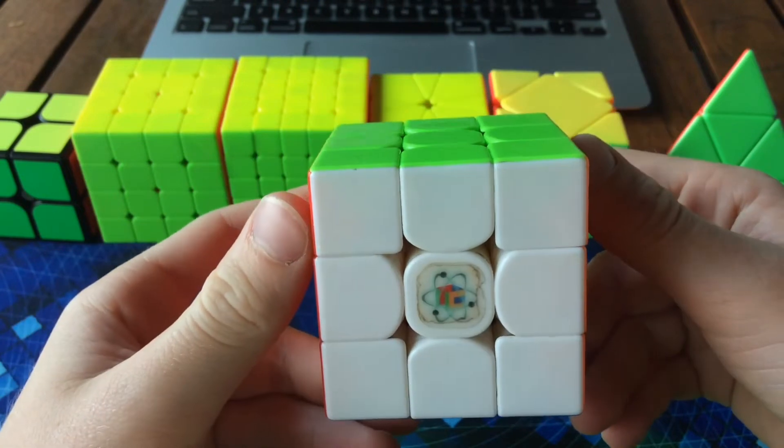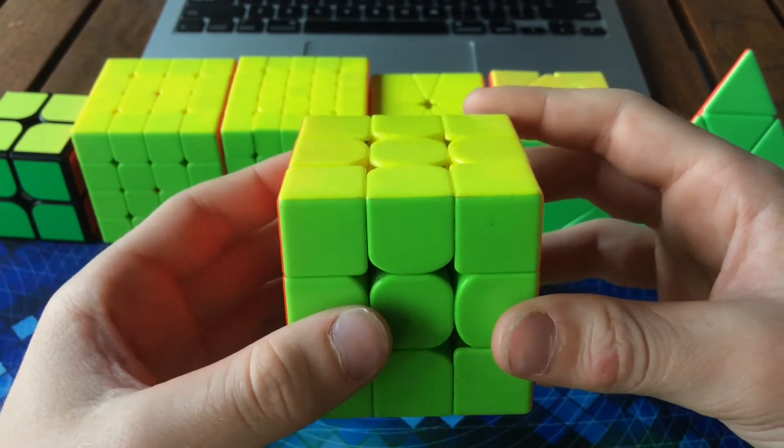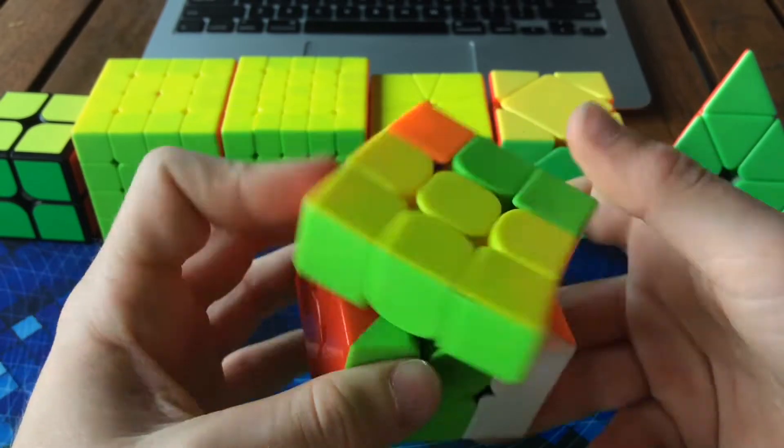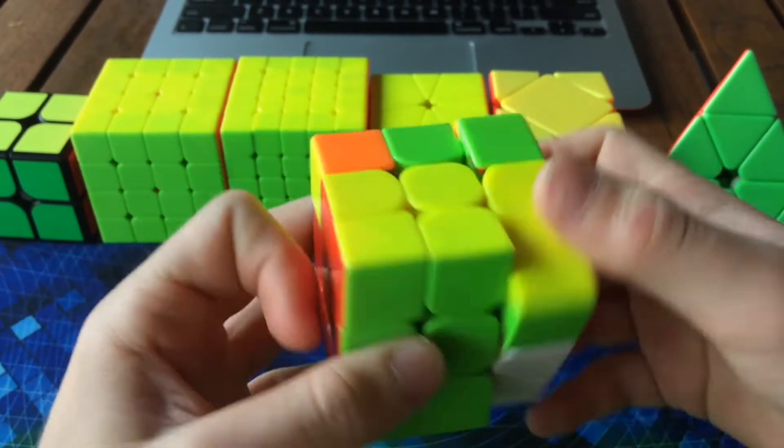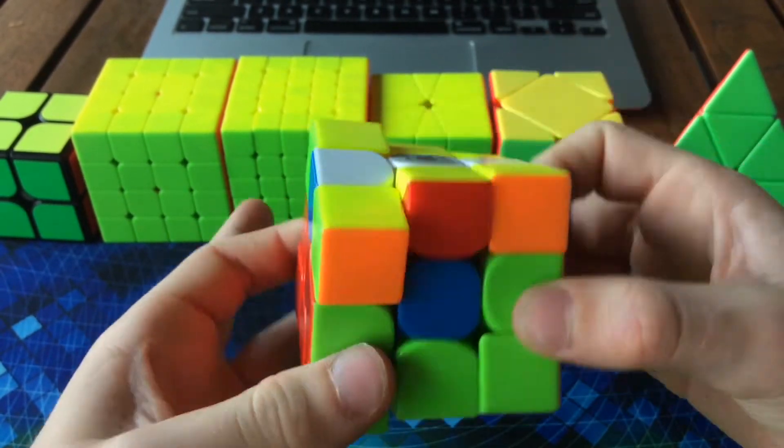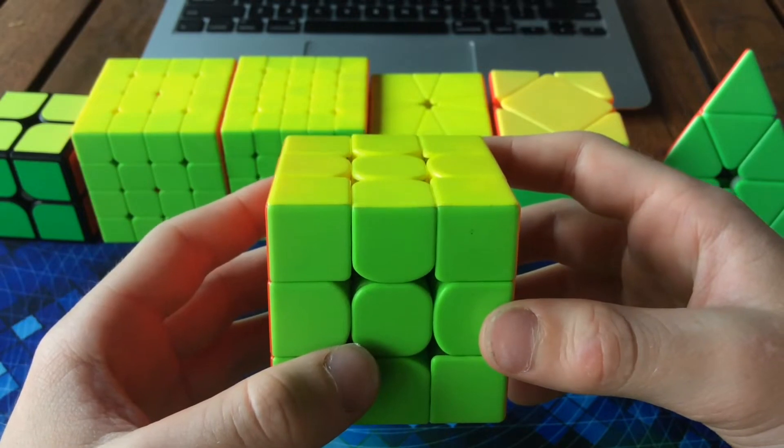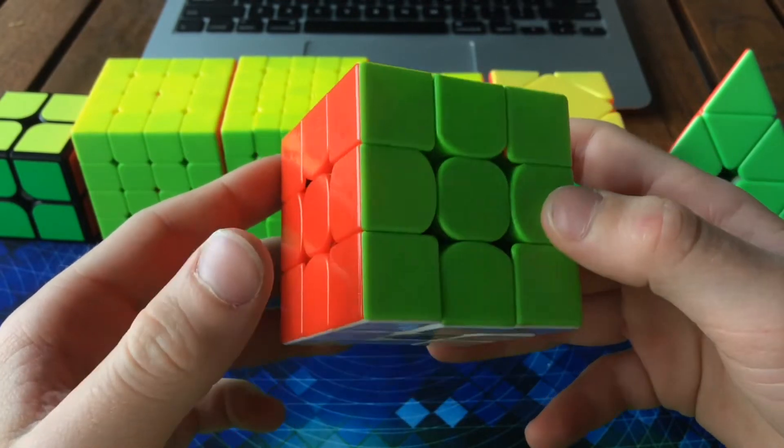For three by three, I'm gonna be using the Cubicle Labs Valk M. This cube has been my main for around a whole year now, and the lube is dying out on me, but I can still achieve my average on it really easily. My goal for three by three is just to get a sub 15 average and a sub 13 single.